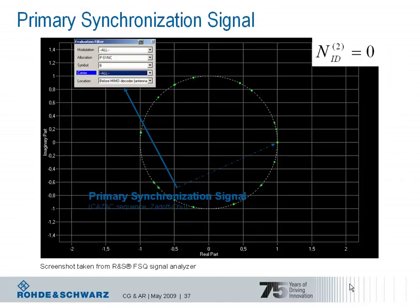Let's look at the two signals. The signal type used for the primary synchronization signal is a Zadoff-Chu sequence. Zadoff-Chu sequences are CAZAC sequences, where CAZAC stands for Constant Amplitude Zero Autocorrelation. The constant amplitude achieves a low peak-to-average power ratio, whereas zero autocorrelation means good time domain behavior.